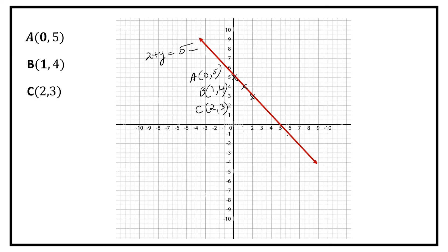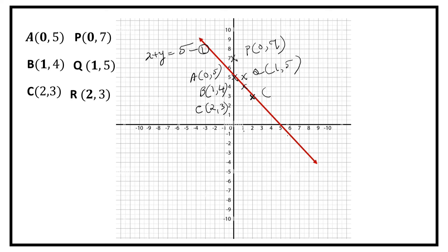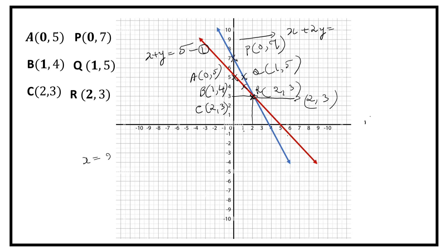Now we have the values for x and y for the second equation. Let us plot the points: P(0, 7), Q(1, 5), and R(2, 3). Now join the points by a straight line. This line represents the equation 2x plus y is equal to 7. These two lines intersect at the point (2, 3).